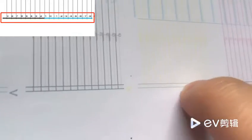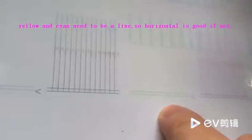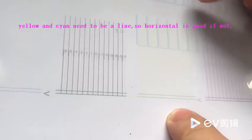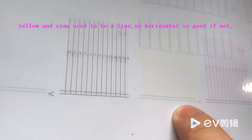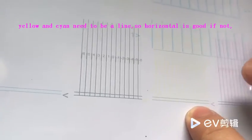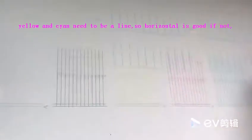These two lines you see. Yellow and cyan, these two lines need to be one line. This is the foundation. Need to adjust it to be one line.